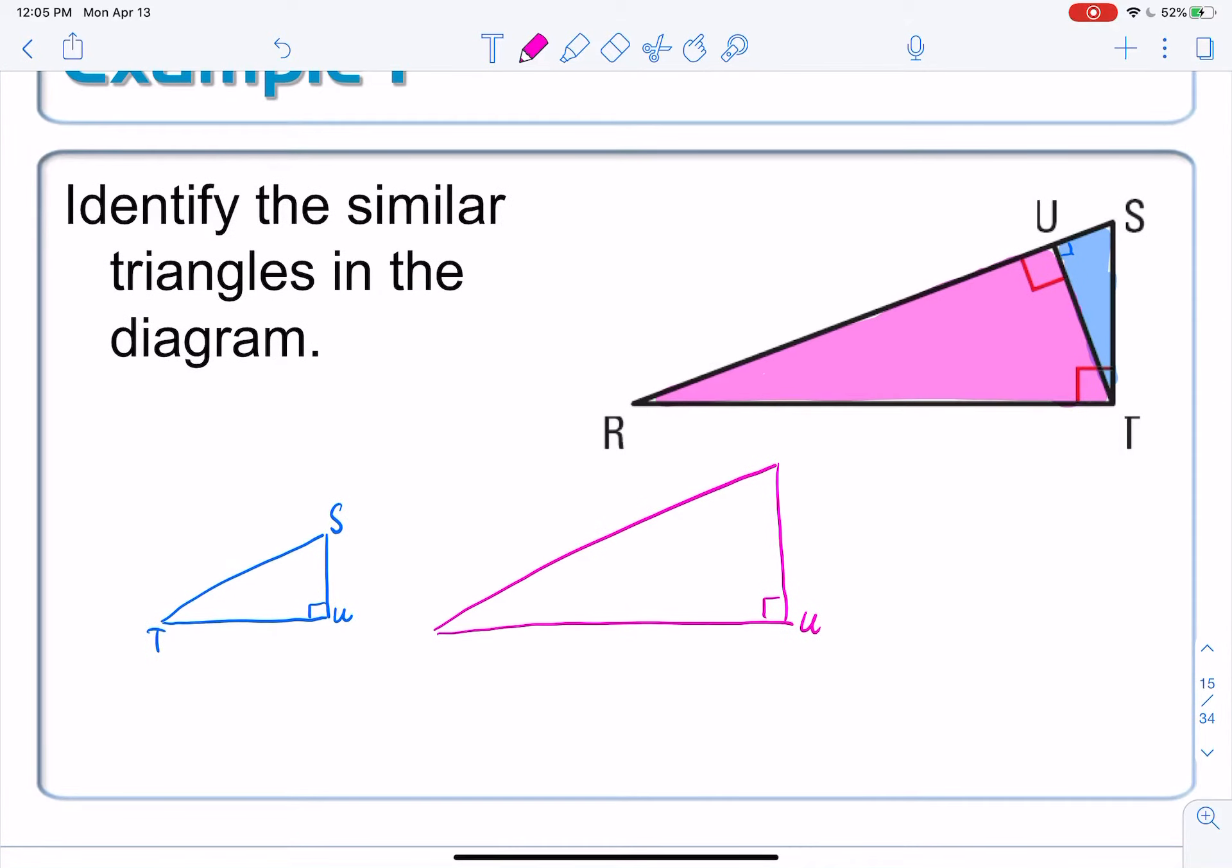And by T, I mean T. And that leaves this last vertex here of an R.